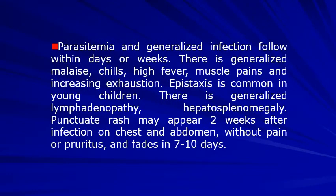Parasitemia and generalized infection follow within days or weeks. There is generalized malaise, chills, high fever, muscle pains, and increasing exhaustion. This is the period where children and affected adults become feverish and ill. Epistaxis is common in young children. There is generalized lymphadenopathy, hepatosplenomegaly, and a punctate rash that may appear within two weeks after infection on the chest and abdomen, resembling measles, without pain or arthritis, lasting seven to ten days.